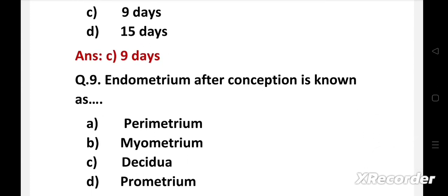Next question. Endometrium after conception is known as: Option A: perimetrium, B: myometrium, C: decidua, D: prometrium.